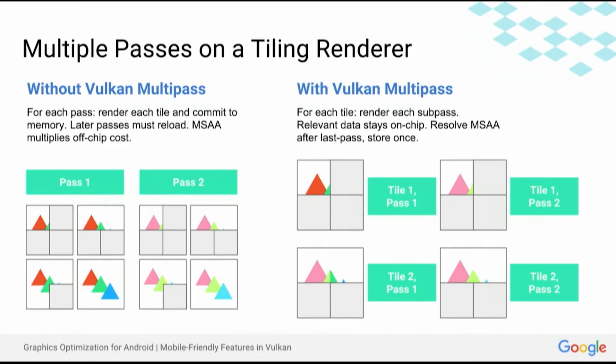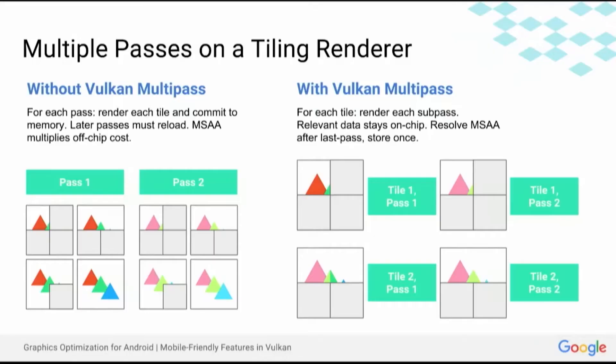So Vulkan adds the multi-pass mechanism directly to the API. This allows you to describe all of those passes as a series of sub-passes. That means that for each tile, you can render all of the sub-passes before moving on to the next tile. This allows relevant data to stay on-chip. And as an added bonus, you can resolve multi-sample after the last sub-pass and store only the single pixel resolved result.